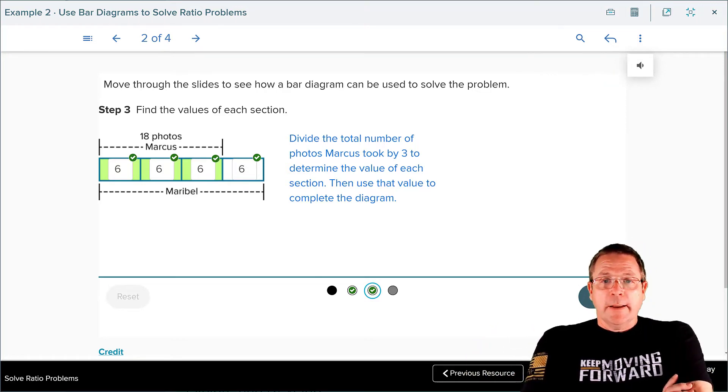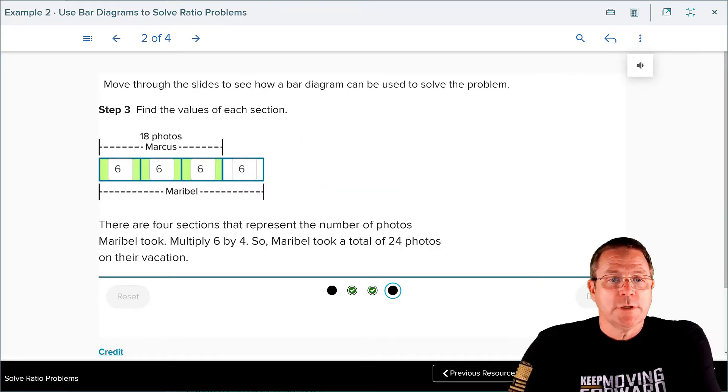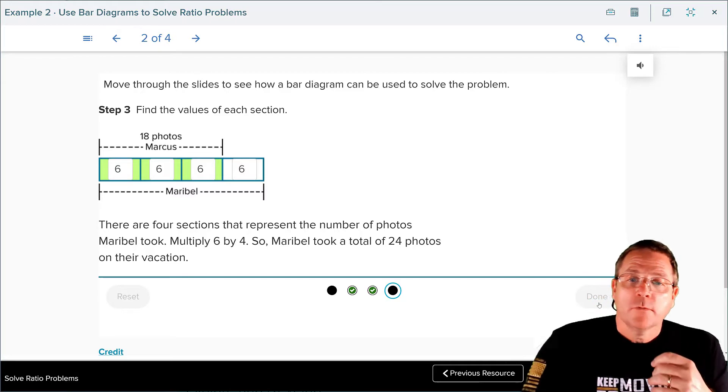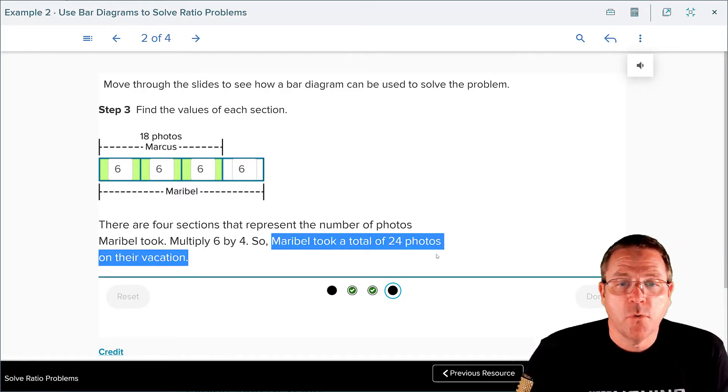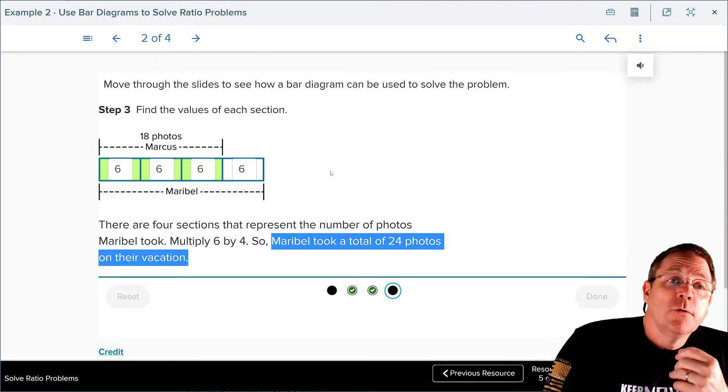Now we're going to use that information to finish the question and find out how many photos Maribel took. There's four sections that represent the number of photos Maribel took. Each of them are six. Six times four is going to be 24. Maribel took 24 photos on their vacation. Pretty easy cool stuff. But I don't think they're done because we've only done slide two of four.